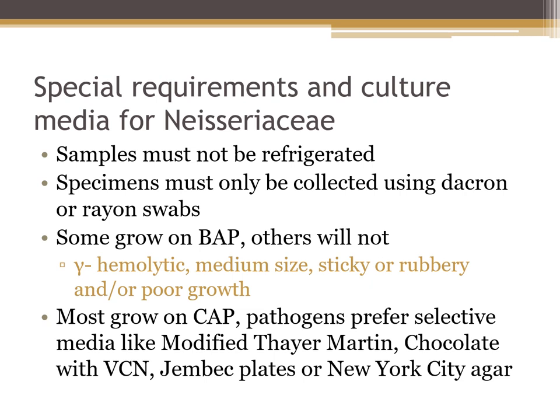Some organisms grow on blood agar but others will not — Neisseria gonorrhoeae will not grow on blood agar, only on chocolate agar. All other Neisserias grow on both blood and chocolate. On blood agar these organisms are gamma hemolytic, medium-sized, sticky or rubbery, and may show poor growth. Most Neisseria species do grow on chocolate agar. The pathogens prefer selective media like modified Thayer-Martin, chocolate with VCN (vancomycin, colistin, and nystatin), Jembec plates, or New York City agar. These media are enriched with dextrose and horse hemoglobin, which suppress gram-positive cocci, yeast, and other gram-negative organisms.